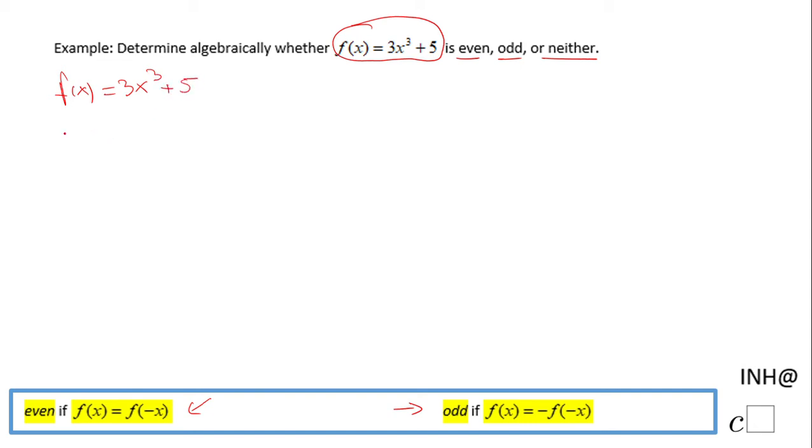I'm going to use a number like 2. I'll evaluate the function at 2, so f(2) = 3(2³) + 5 = 3(8) + 5 = 24 + 5 = 29.